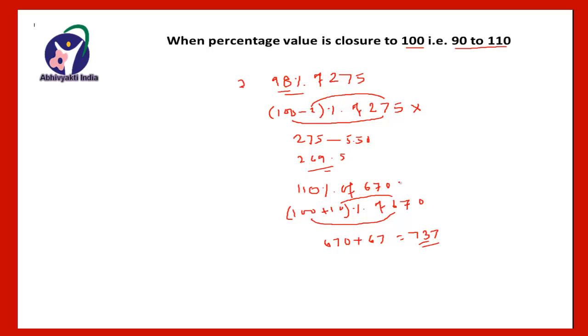Take one more example. If it is like that, 93% of 551. So 93% means 100 minus 7% of 551. 100% will be 551 and 7% means just multiply by 7 to this number and put a decimal point after 2 digits. So it will be 38.57, and after subtraction you will get it as 512.43. The required percentage is 512.43.